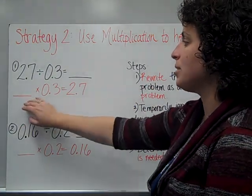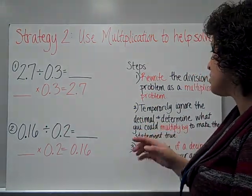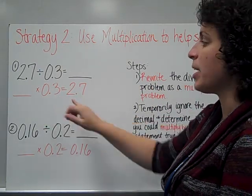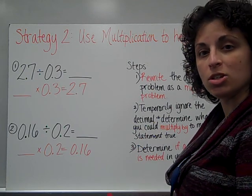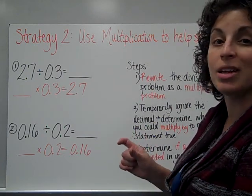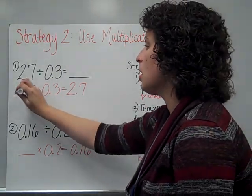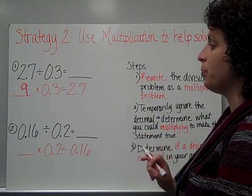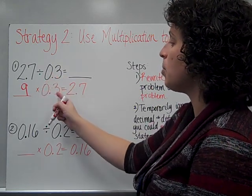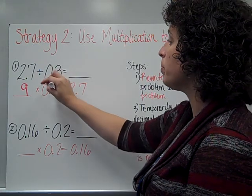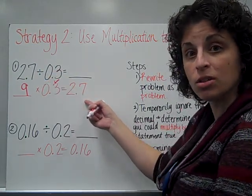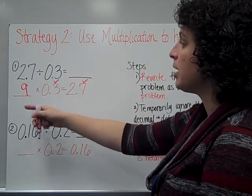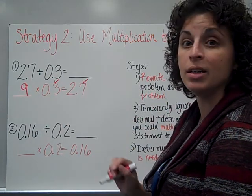What times 0 and 3 tenths is going to equal 2 and 7 tenths? I'm going to temporarily ignore the decimal and determine what times 3 could make 27. We've talked about in a previous video how multiplying the same digits will give us the same answer — we may just need a decimal in there. So what times 3 is 27? That's 9. Now I need to decide if I need a decimal in my answer. There is 1 digit after the decimal in the problem, so the number of digits after the decimal in the answer must match — so this 9 does not need a decimal.